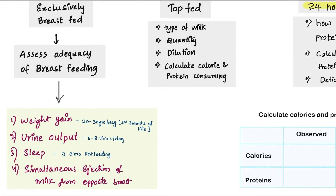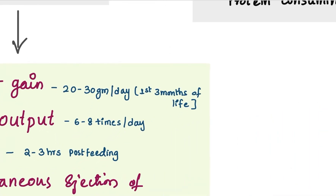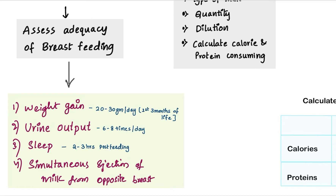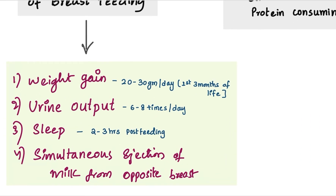First is weight gain — we check if the infant is gaining weight appropriate to age. Usually during the first 3 months of life, weight gain is 20 to 30 grams per day. Second is urine output — ask the mother if the child is passing urine 6 to 8 times a day. Third, ask regarding sleep — if the child sleeps at least 2 to 3 hours post-feeding. Fourth, ask if there is simultaneous ejection of milk from the opposite breast. These 4 signs indicate the adequacy of breastfeeding.